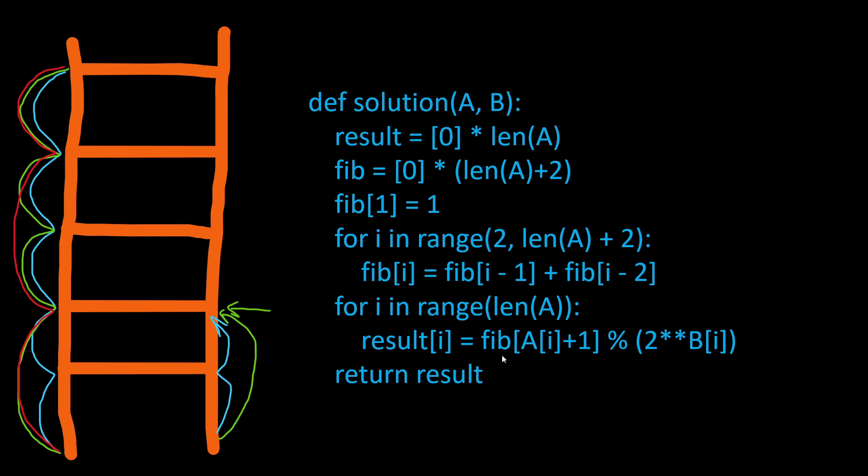So we can't display or return a large number. Instead of returning large numbers we are going to return the number modulus 2 to the power of B[i]. And it's as simple as that. This algorithm is correct. It gives you 100% on the correctness.